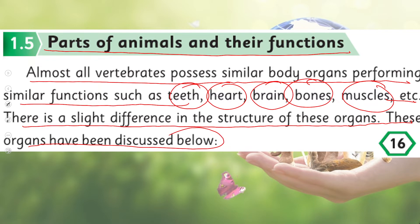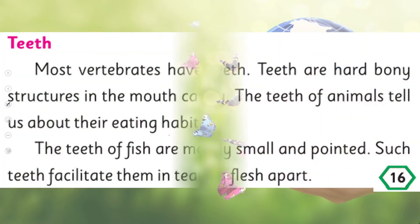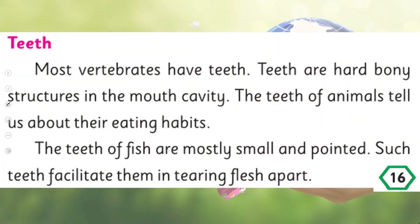So, all vertebrates have almost similar organs, but they look different — yani ki wo dekhne mein mukhtalif hoti hain — and there are slight variations in them. But almost all of them perform more or less the same function.